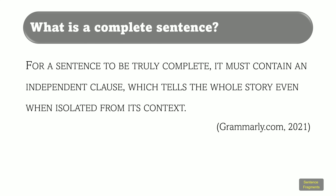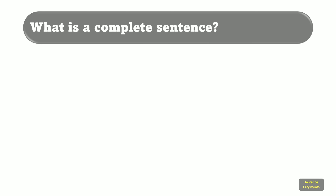For a sentence to be truly complete, it must contain an independent clause, which tells the whole story even when isolated from its context. You definitely need to know what a complete sentence is first. For example, here's one: I went to the grocery store. This sentence clearly expresses a complete idea and can stand alone without anything affecting its meaning.